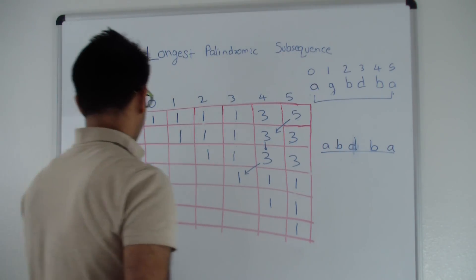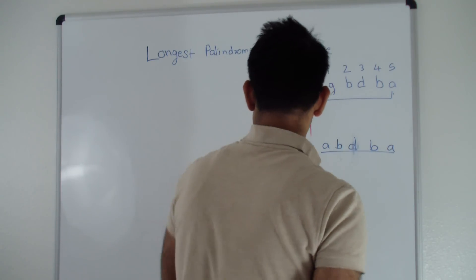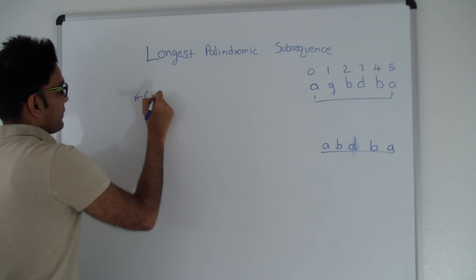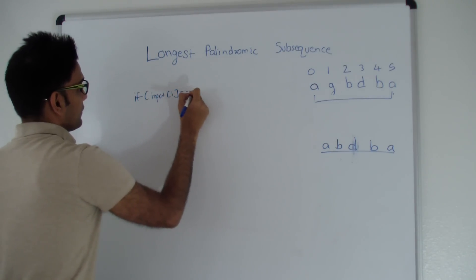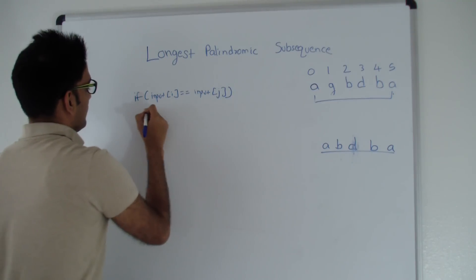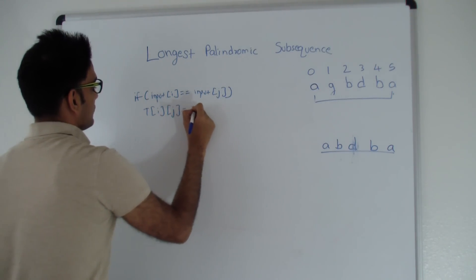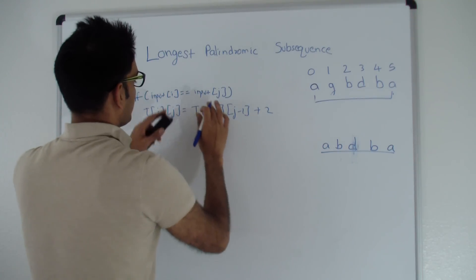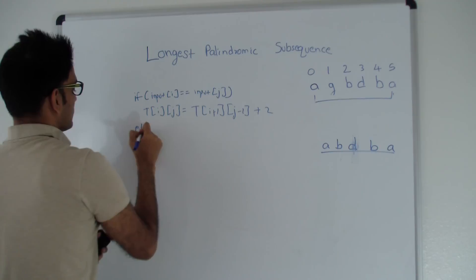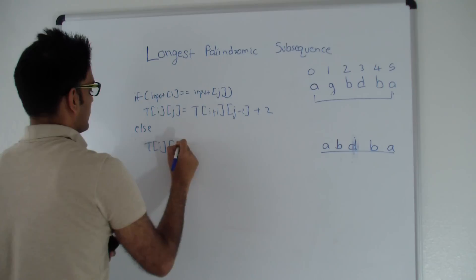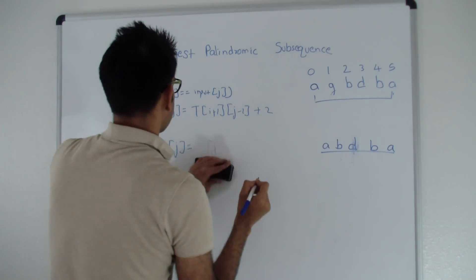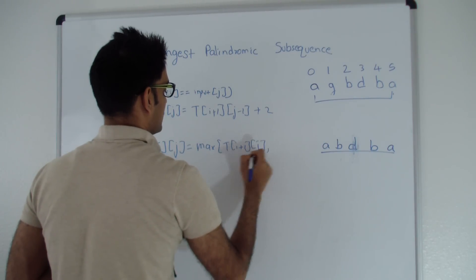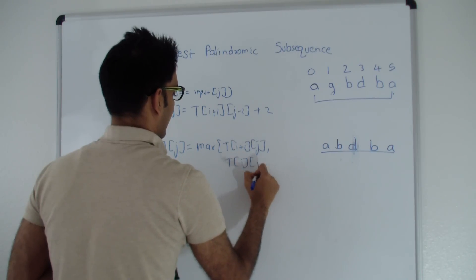Let me quickly write the formula. If input[i] equals input[j], then T[i][j] equals T[i+1][j-1] plus 2 — we look diagonally. Else, T[i][j] equals max of T[i+1][j] or T[i][j-1].